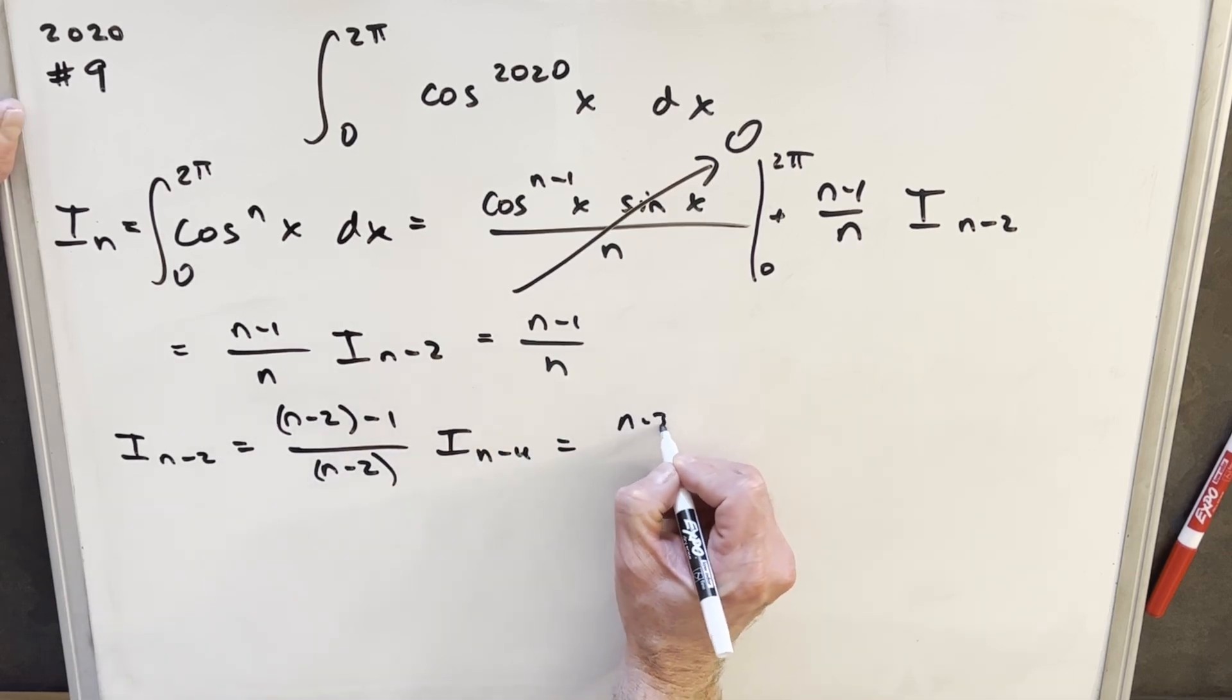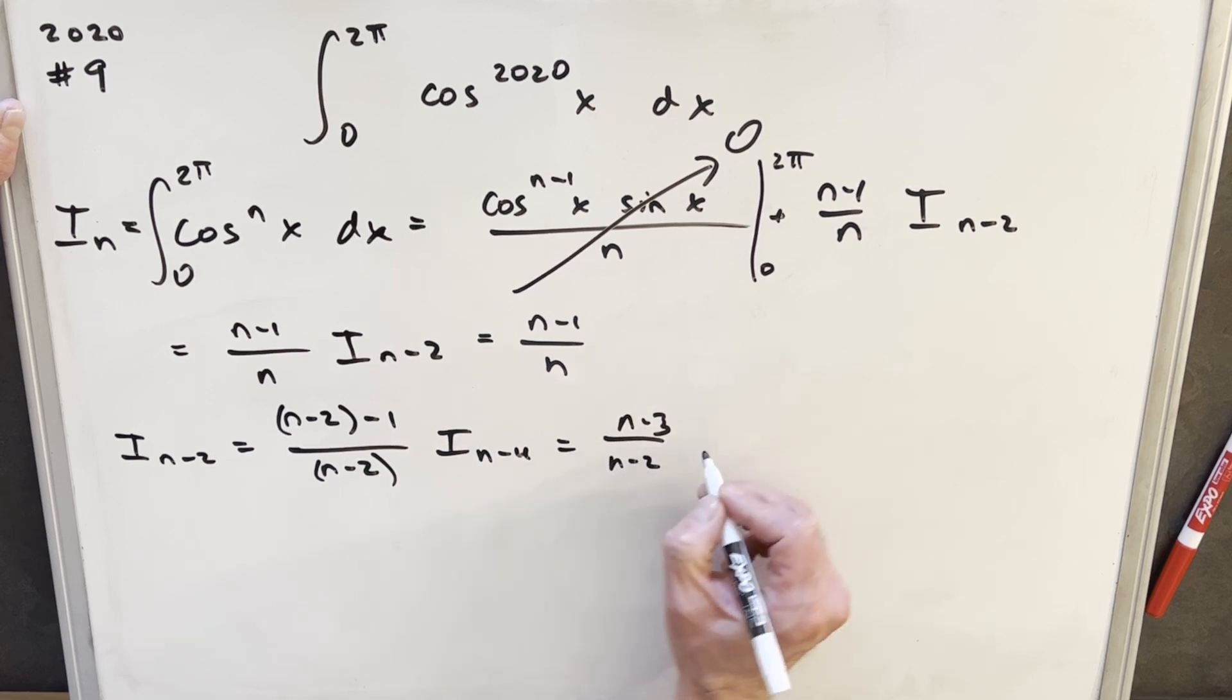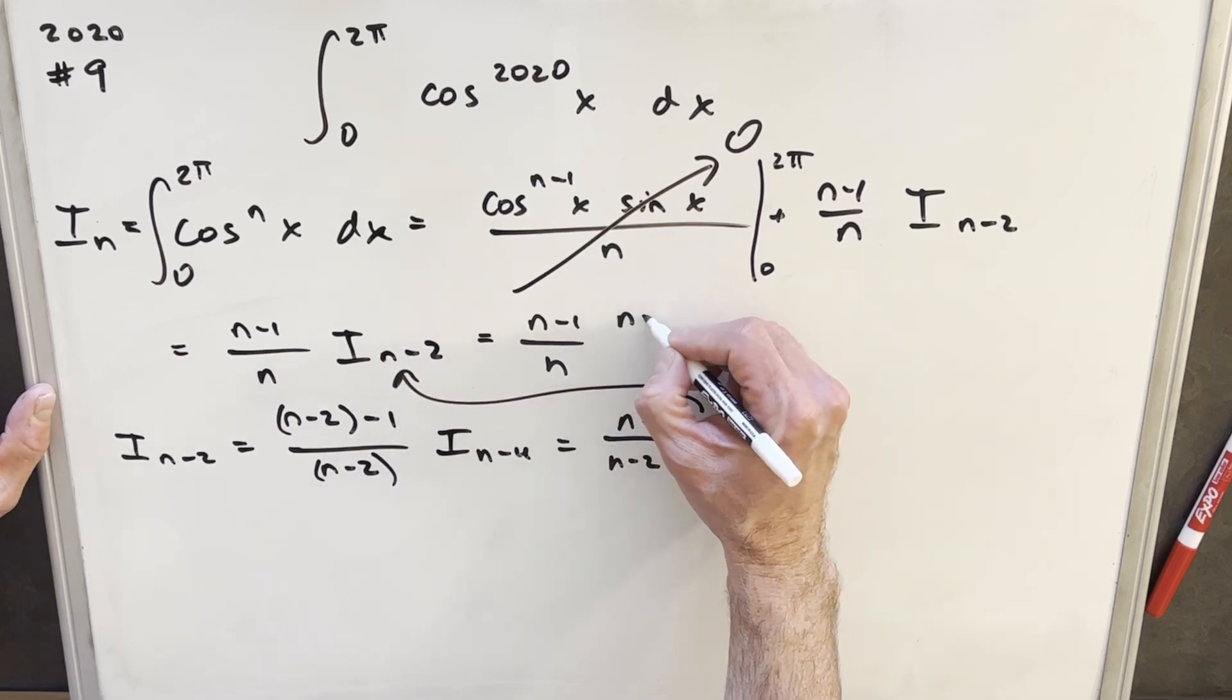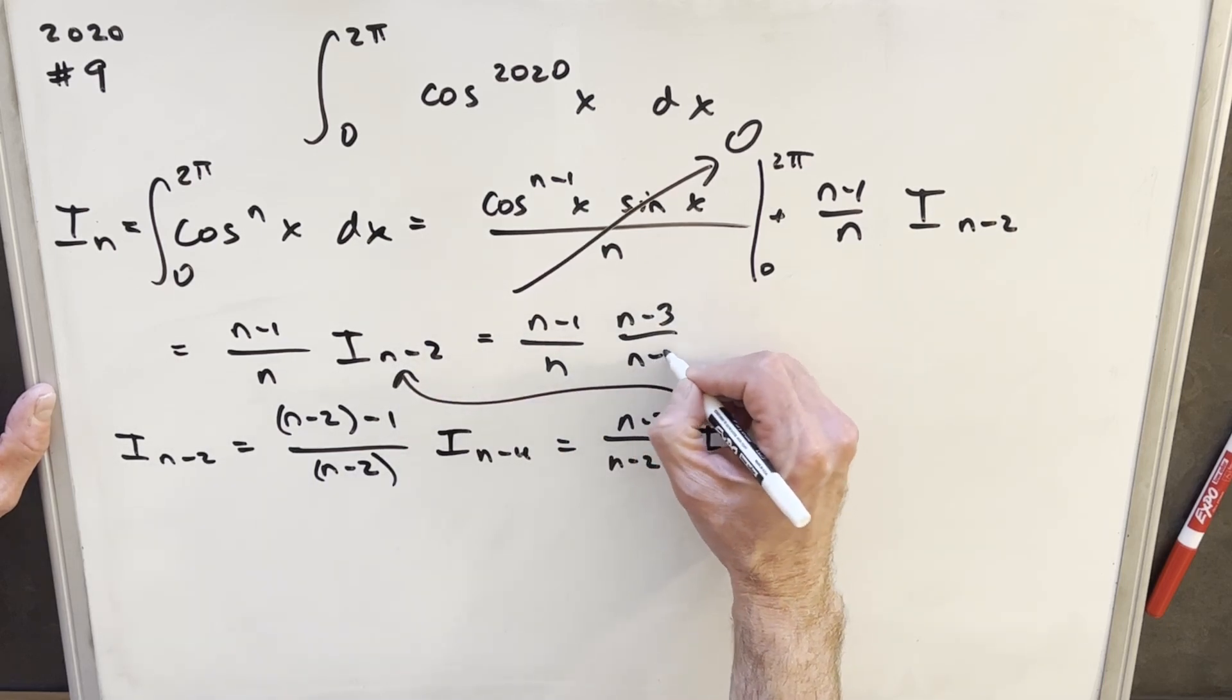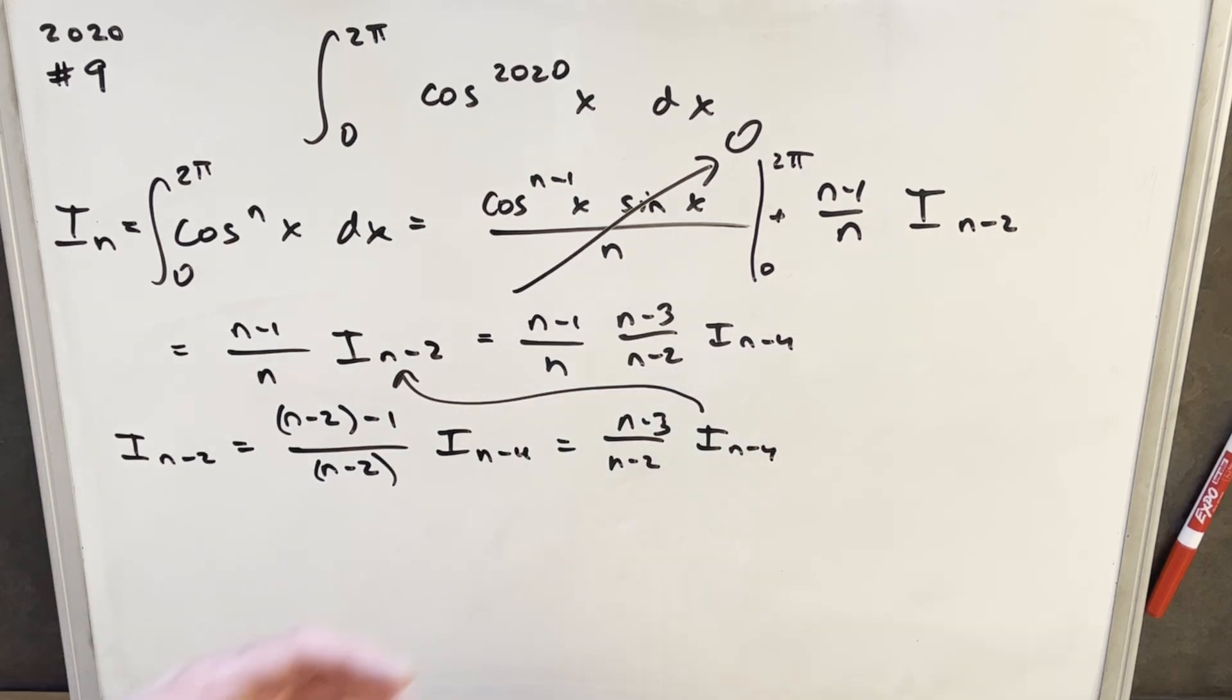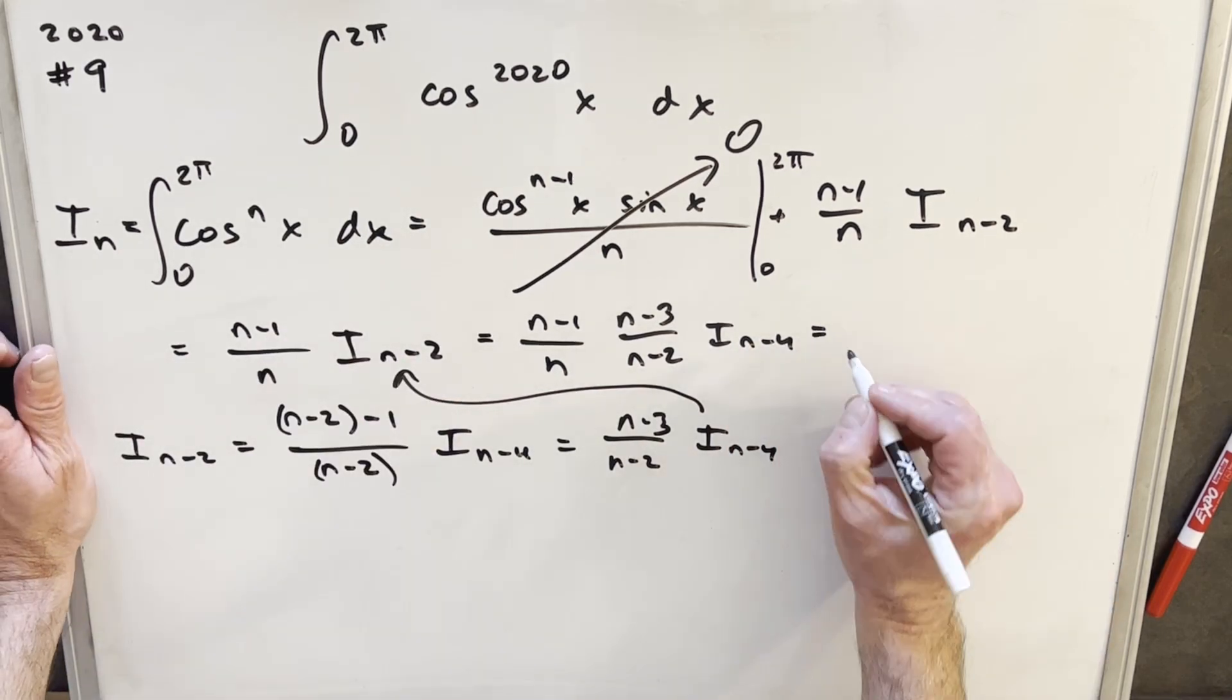Okay, well, this is the same thing as n minus 3 over n minus 2, i n minus 4. So then we can take this value and plug it in over here. And we're going to have n minus 3 over n minus 2 to the i n minus 4. Okay, so that's one iteration. But then we can just do the same thing over again, right?